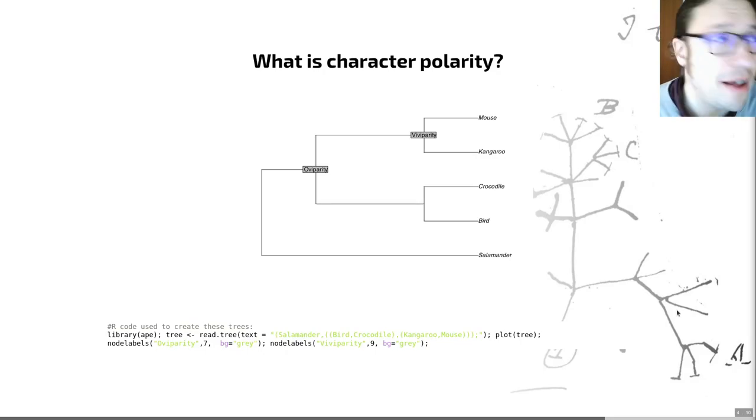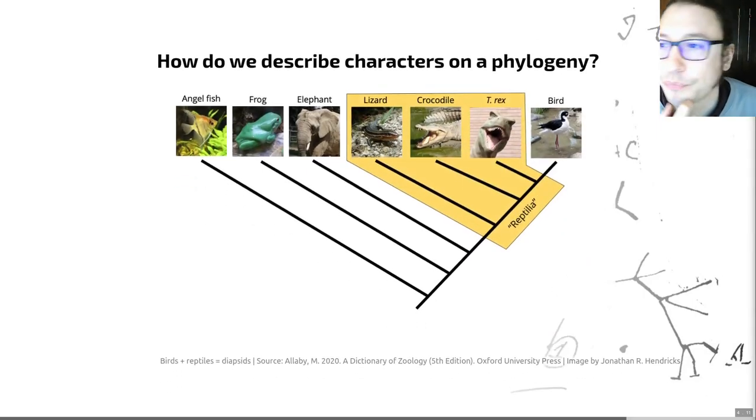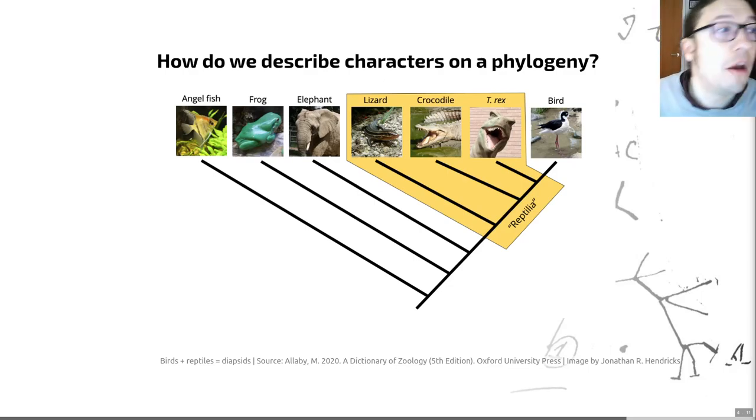However we can solve this by adding an outgroup. An outgroup in a phylogeny is a group outside the clade of interest that allows us to establish character polarity. In this case we could happily add a cheeky salamander, why the devil not, and if we do this we can say well since a salamander lays eggs, this node must be one that represents oviparity and this viviparity must be a shared derived characteristic of the mouse and the kangaroo. So in this case the eggs came first and oviparity is the original condition as opposed to viviparity. So outgroups allow us to highlight character polarity.